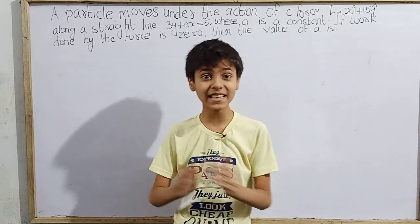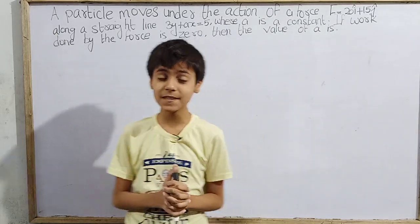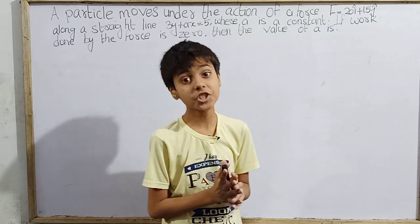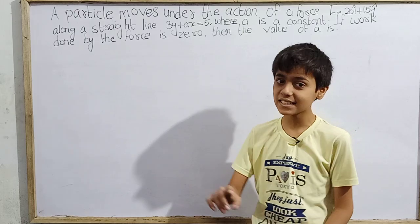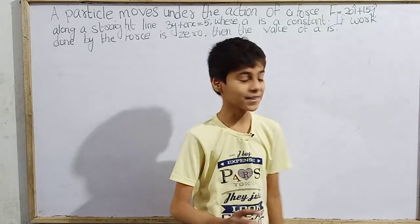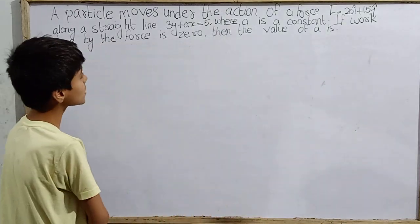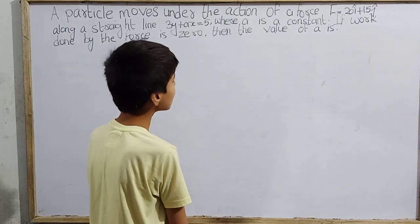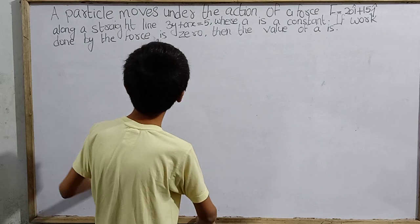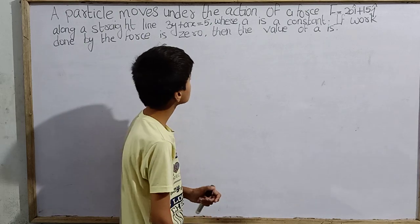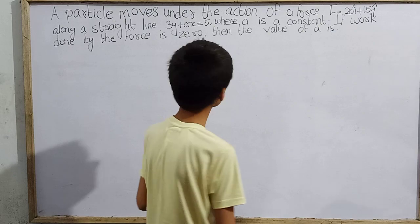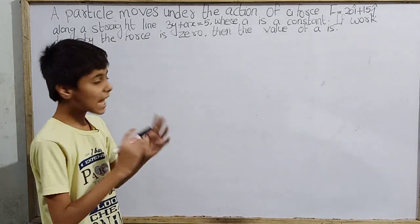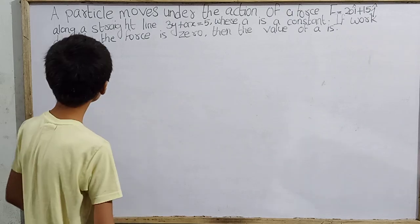Hello everyone, welcome back to Ask A One A Kiss. We are back with some new questions on physics. Today's question is from Shivan Kumar bhai, and it is really very interesting: a particle moves under the action of a force F equals 20 i-cap plus 15 j-cap along a straight line 3y plus ax equals 5, where a is a constant. If work done by the force is 0, then the value of a is?